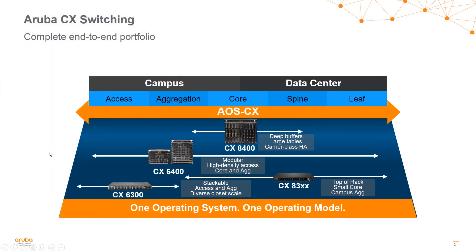When we're talking about the Aruba CX switching platform, we really do have a switching platform that leverages one operating system and one model that can be stretched from end to end in a customer's environment — campus and data center environments, campus access aggregation and core all the way to the data center spine and leaf solutions. We can see the portfolio here; we actually have the CX 8400 at the top, which has the larger buffers and larger table sizes.